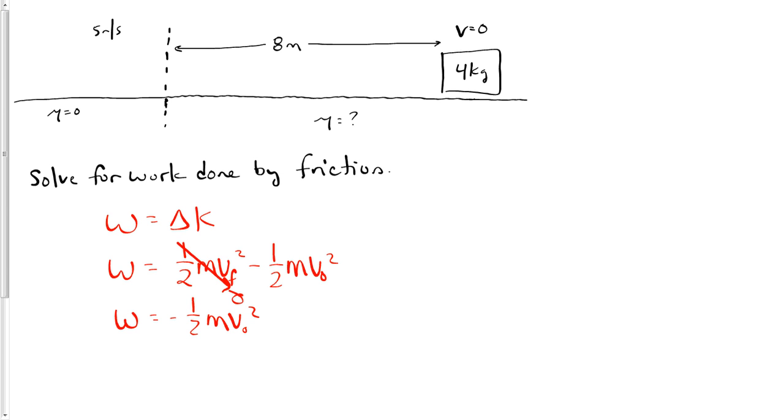So work in this case equals -1/2 times the mass 4 kg times the initial velocity 5 m/s quantity squared. 5² is 25 times 4 is 100 divided by 2, so the work done is -50 joules.